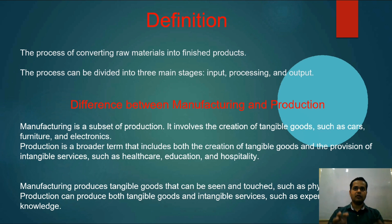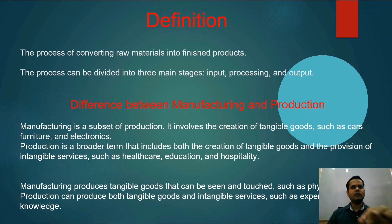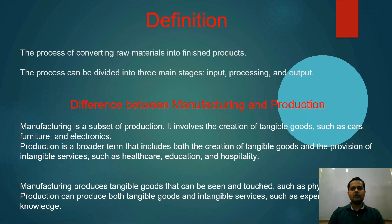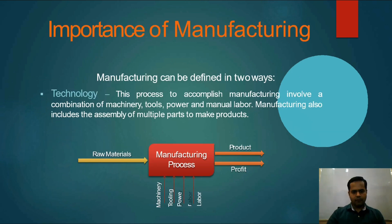Production is a broader term that includes both the creation of tangible as well as intangible things. Both services and manufacturing are included in production. Intangible things — for example, a film production house. Films cannot be touched, only watched, so they are intangible. That is called production, not manufacturing. Similarly, the hotel industry and service sector all count under production, but not under manufacturing.